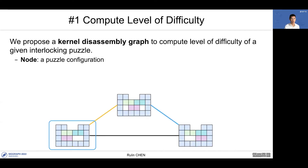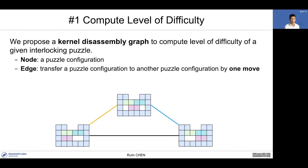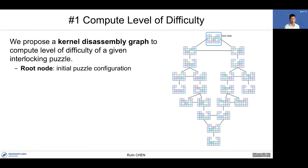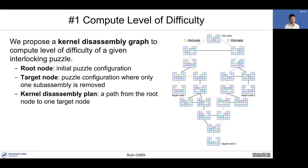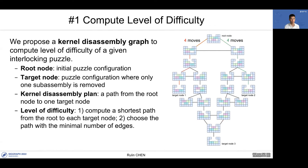To compute the level of difficulty, we propose a kernel disassembly graph. Each node is a puzzle configuration, and each edge represents transferring one puzzle configuration to another by one move. The root node indicates the initial puzzle configuration, and the target node is a configuration where only one subassembly is removed. The kernel disassembly plan is a path from the root node to a target node. The level of difficulty is computed by: first, computing the shortest path from the root to each target node; second, choosing the path with the minimal number of edges.